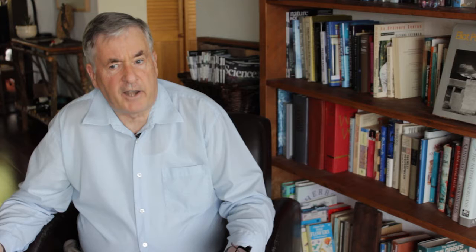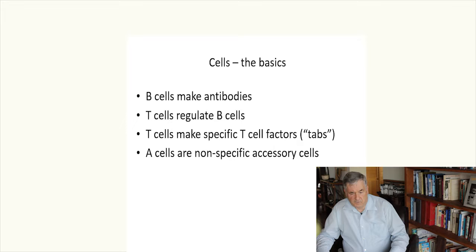So I'm going to be starting from scratch in this development. Starting from scratch means starting off with what are the components of the system. The basics are that B cells or B lymphocytes make antibodies. T cells, also called T lymphocytes, regulate the production of antibodies by B cells. T cells make molecules called specific T cell factors. And these specific T cell factors can conveniently be called tabs because four words for one entity is a little extravagant.